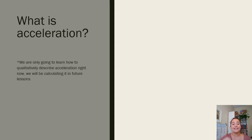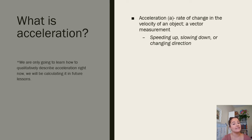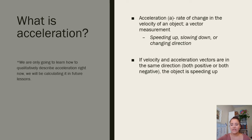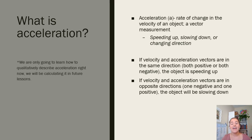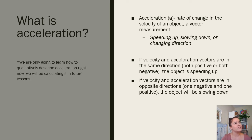One last thing: acceleration. For now we're only going to qualitatively describe acceleration — in future lessons we'll calculate it. Acceleration is the rate of change of the velocity of an object, and it is a vector measurement with direction. Acceleration can be speeding up, slowing down, or changing direction. If velocity and acceleration vectors are in the same direction, the object is speeding up. If they're in opposite directions, the object is slowing down. It doesn't matter if both are positive or both are negative — same direction means speeding up; one positive and one negative means slowing down.